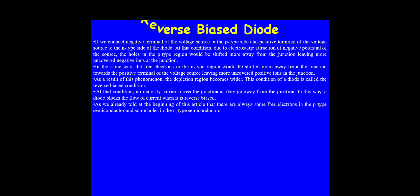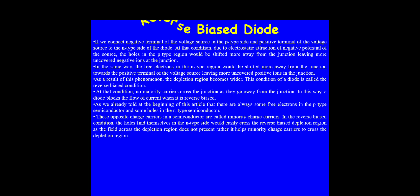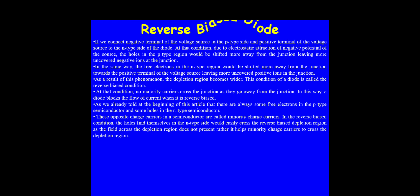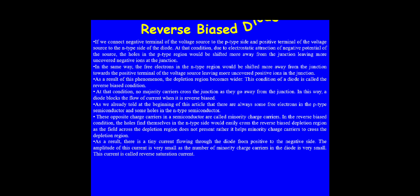There are always some free electrons in the P-type semiconductor and some holes in the N-type semiconductor — these are called minority charge carriers. In the reverse biased condition, these minority carriers can easily cross the depletion region because the electric field actually assists them. As a result, a tiny current flows through the diode. Its amplitude is very small due to the small number of minority carriers, and this current is called the reverse saturation current.